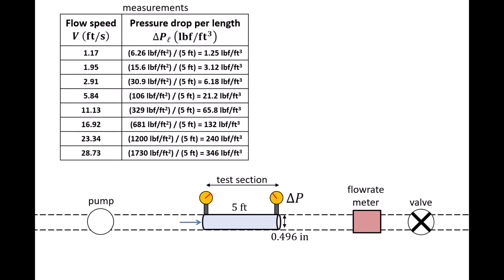Let's say we conduct an experiment where we vary the flow speed from 1.17 feet per second to 28.73 feet per second and take 8 measurements. At each flow speed, we measure the pressure drop over the 5-foot test section of pipe. For example, when the flow speed is 1.17 feet per second, we measure a pressure drop of 6.26 pounds-force per foot squared. This is the pressure drop over the entire test section, so we divide this value by 5 feet in order to obtain the value for delta P/L, and we get 1.25 pounds-force per foot cubed.